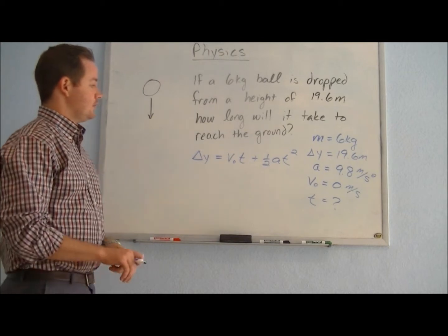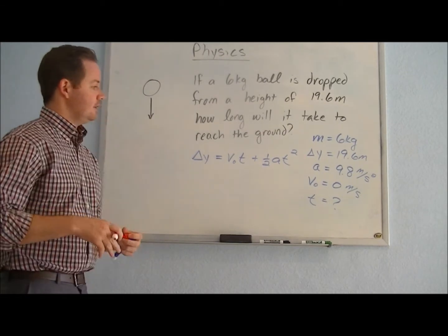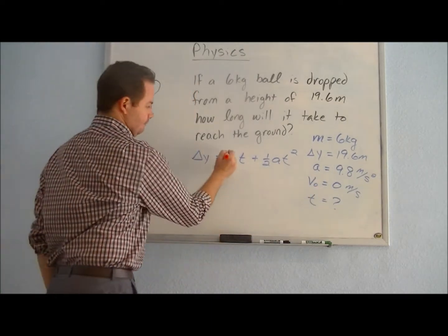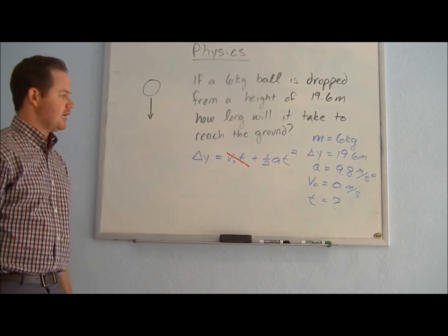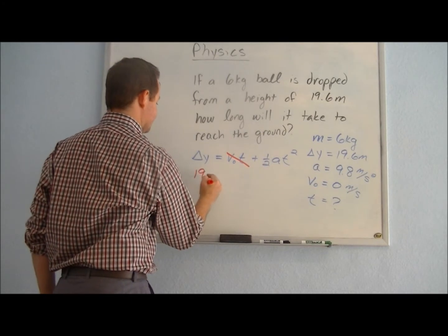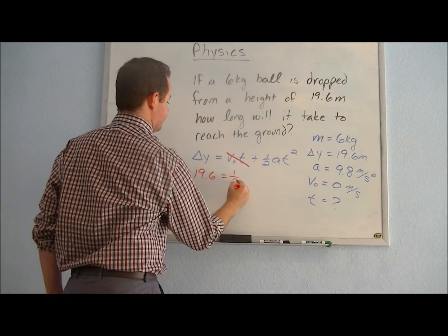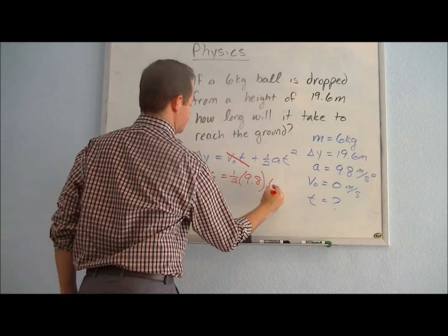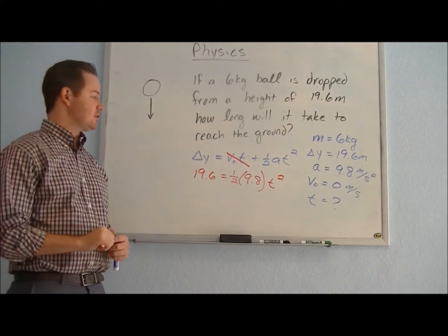Now the reason that we want to use this equation is because the nice thing about having an initial velocity of 0 is that it cancels out that term from our equation. So this equation actually simplifies a little bit, and as we plug in our values, delta y is 19.6, one-half times 9.8 times t squared. We're down to one variable, and we will be able to solve for t here.